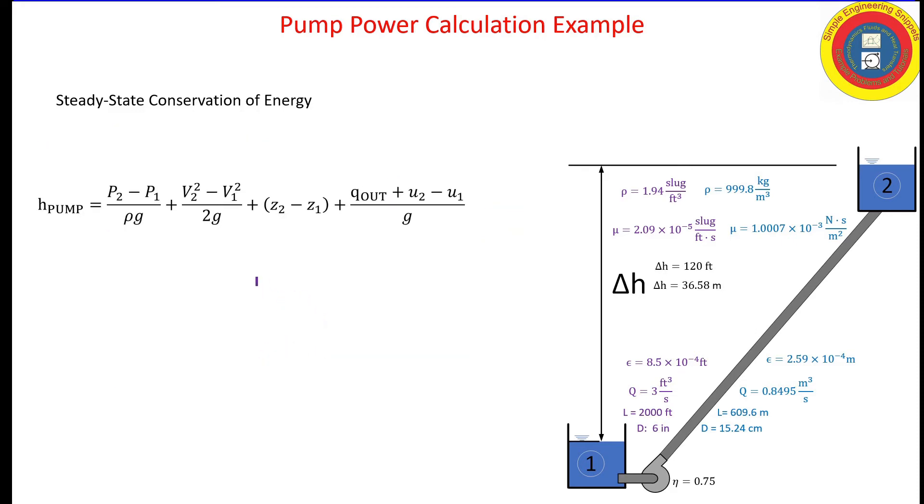We're going to simplify this because at point one, the pressure is atmospheric. At point two, the pressure is atmospheric. So that term cancels out. We're going to assume that these reservoirs are large tanks, and so the velocities are zero at point one and point two. The change in elevation term, that's delta H, and that is provided.